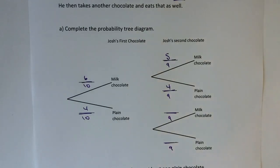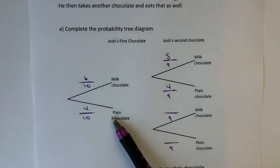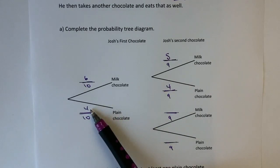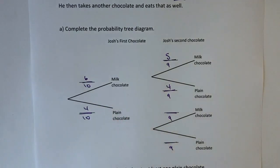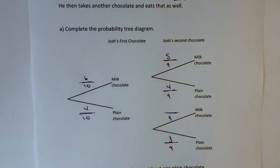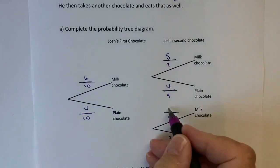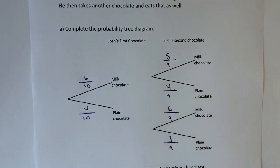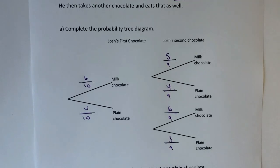Now let's look at what happens when he had a plain chocolate the first time round. Because there were four plain chocolates and he's eaten one of them, there's actually now only going to be three plain chocolates left in the box, but there's still going to be six milk chocolates. The way I've worked through this is the way I normally suggest to my students — to be very logical in the way that you put these things together.